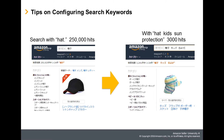Many buyers on Amazon use search to look for products. For buyers with a clear buying objective, multiple keywords are used to narrow down the product. For example, searching with 'hat' gets 250,000 hits, but searching with 'hat, kids, sun protection' narrows it down to 3,000 hits, making it easier to find the intended product.